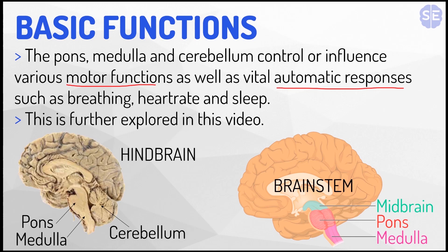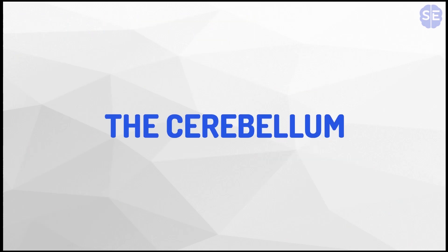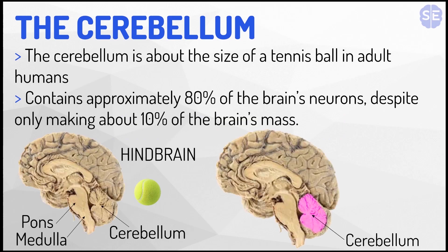Now we'll move on to the first part of the hindbrain: the cerebellum. The cerebellum is about the size of a tennis ball in adult human brains. It contains about 80% of the brain's neurons, despite only making up 10% of the brain's mass. Here in this diagram, we can see exactly where the cerebellum is, shown in pink.